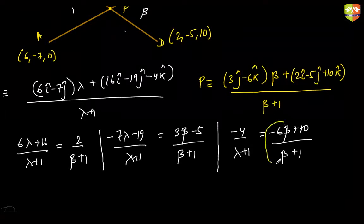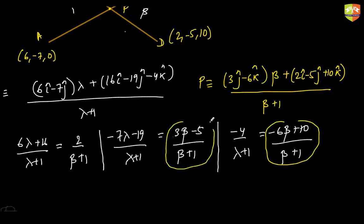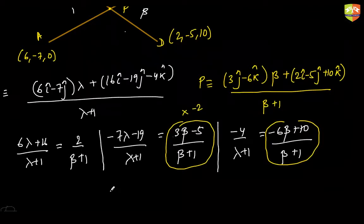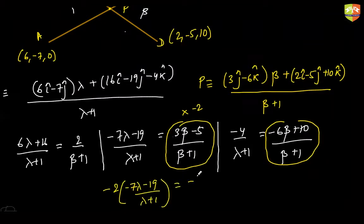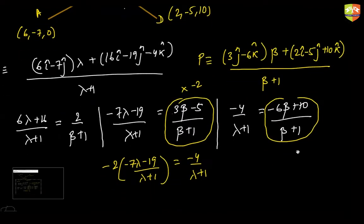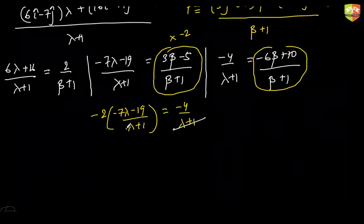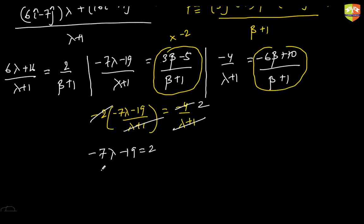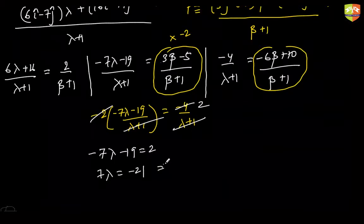Notice there is a stark resemblance between the k equation and the j equation — the k numerator is just the j numerator multiplied by -2. So multiplying both sides of the j equation by -2 and equating left-hand sides gives (-7λ - 19) × (-2) = -4, which simplifies to 7λ = -21, so λ = -3.